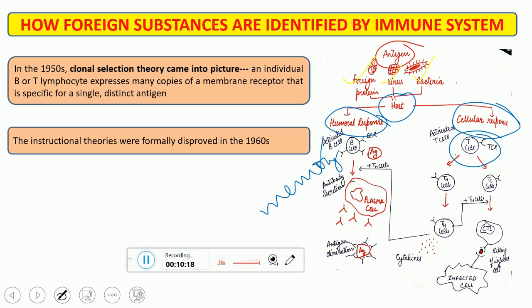Memory cells are basically cells which store the information of the antigen, so in the future if this antigen comes into the host body again, there won't be any need to generate or activate the total immune system. The antibodies already present in the immune system get activated, capture this antigen, and neutralize it. So in humoral response, B cells get activated, releasing antibodies and memory cells. These antibodies neutralize the antigen and memory cells keep the information of that antigen, so in future there's no need to activate the complete process.